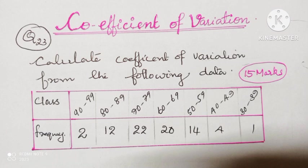Calculate the coefficient of variance from the following data. Class is given, frequency is given. Class is 90 to 99, 80 to 89. There we can see the gap there. We have to transfer the inclusive series to exclusive series.